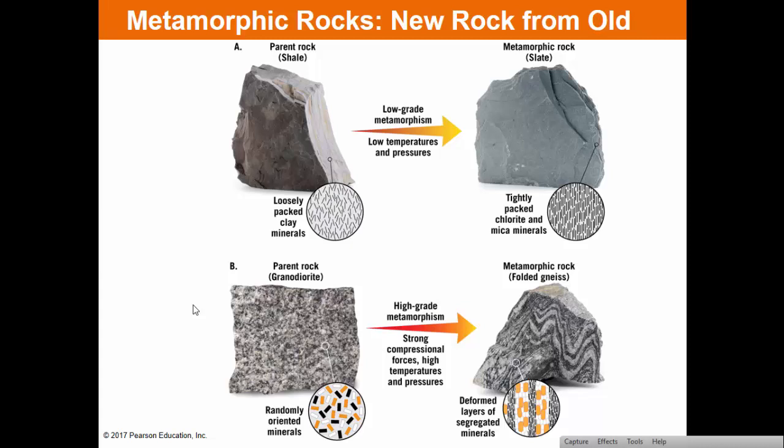Here are two examples. First: shale, formed from clay settling at the bottom of a lake or ocean, compacted into rock. With low heat and pressure, it slowly turns into slate — the minerals are just packed more tightly. Second: a granitic parent rock with randomly oriented minerals, under high-grade metamorphism with strong compression and heat, has its minerals literally lined up, creating foliation — wavy lines showing deformation. That's granitic rock turned into gneiss.